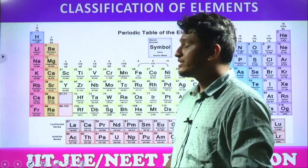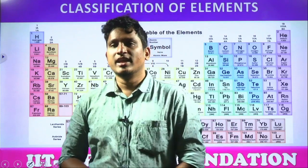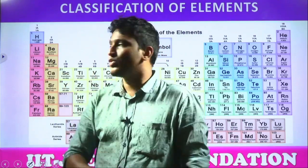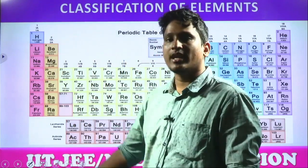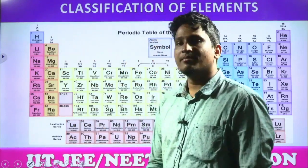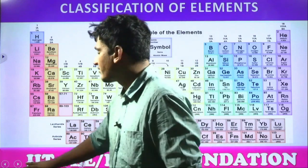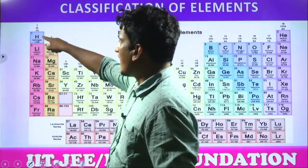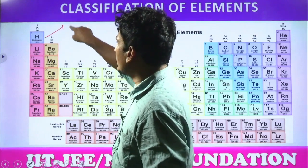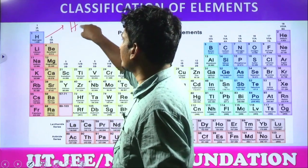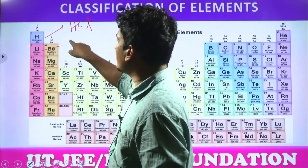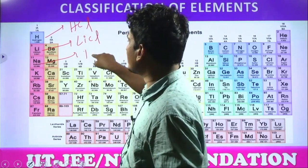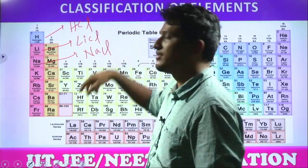Elements show the same reactivity in the same group. Elements in the first group have the same chemical reactivity, and elements in the second group have the same chemical reactivity. For example, if hydrogen combines with chlorine the formula is HCl, if lithium combines with chlorine it is LiCl, if sodium combines with chlorine it is NaCl — this is similar reactivity.